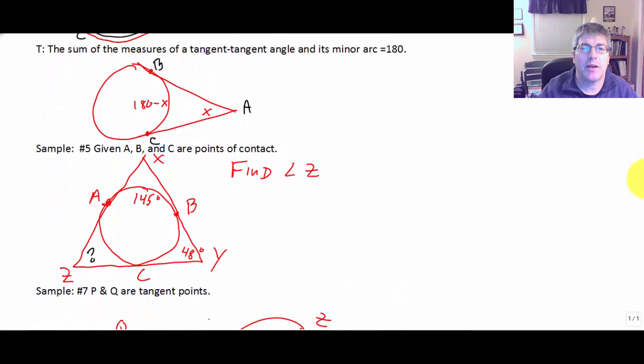So let's take a look at a sample problem. What kind of problems are we going to see here that apply this knowledge? We might have a diagram that says A, B and C are all tangent points of triangle XYZ. And we might want to find angle Z. Well, we're given angle Y is 48 and arc AB is 145.